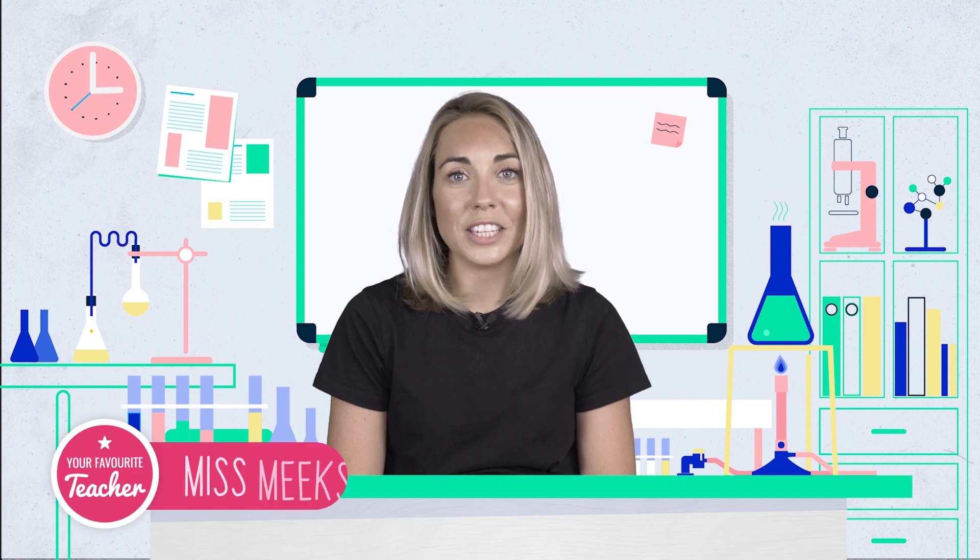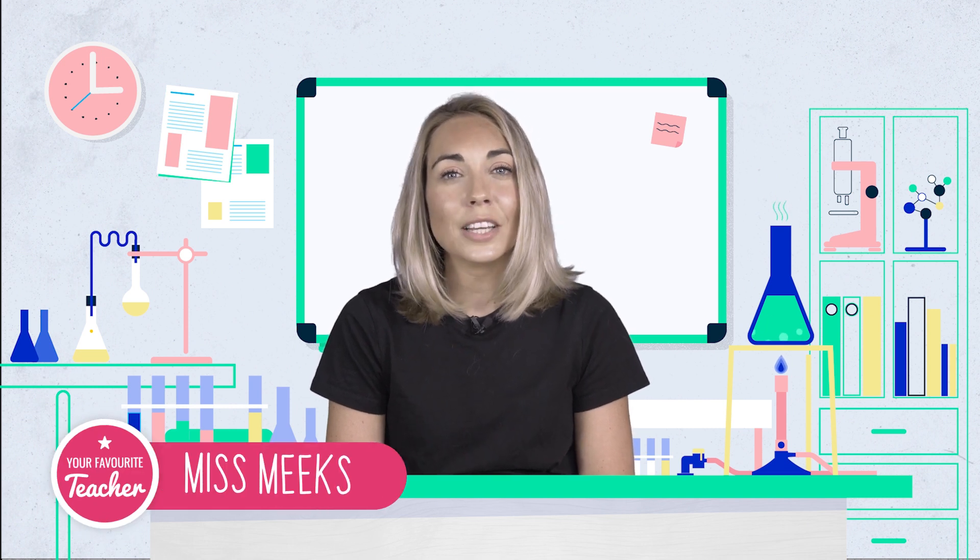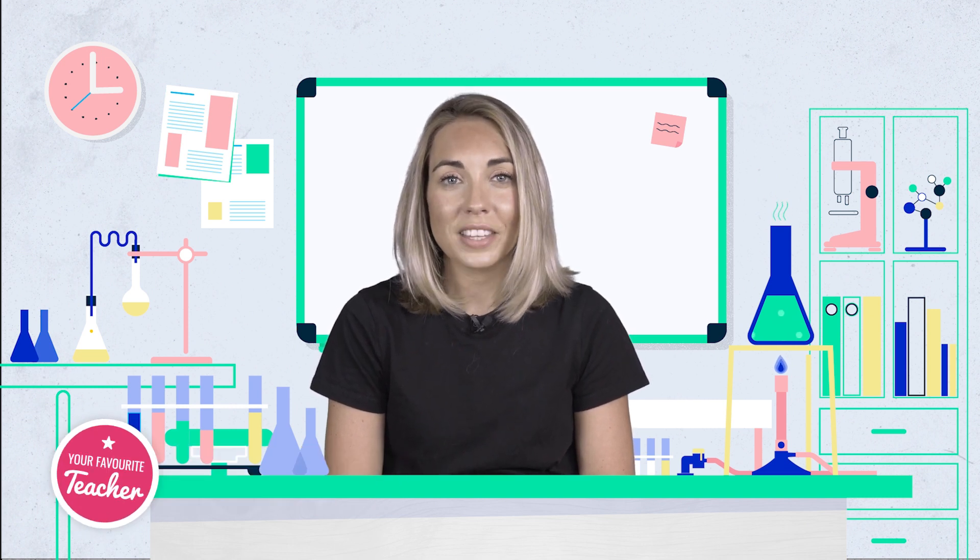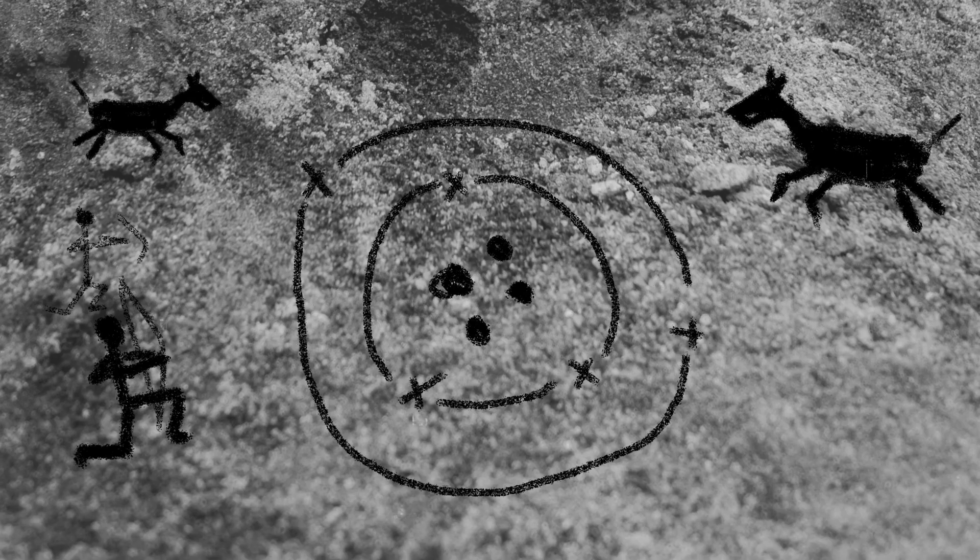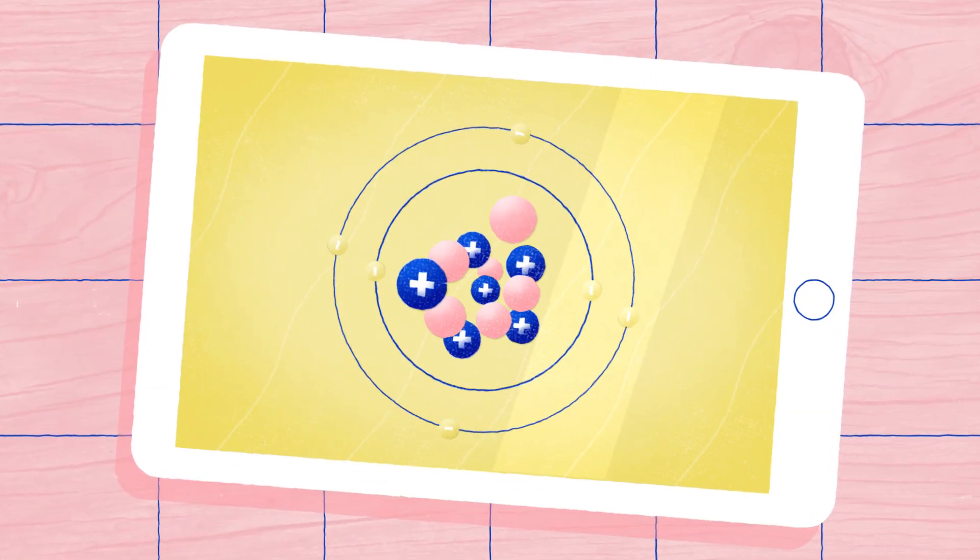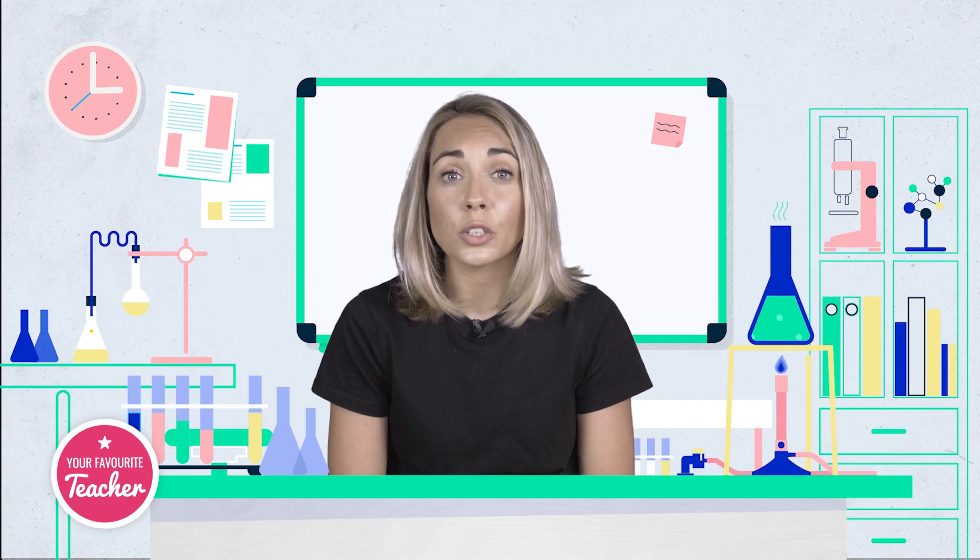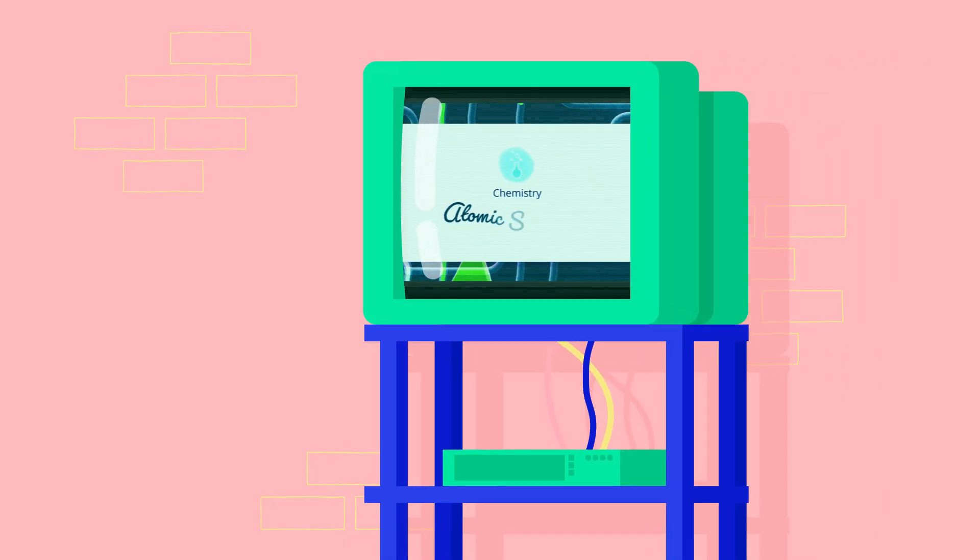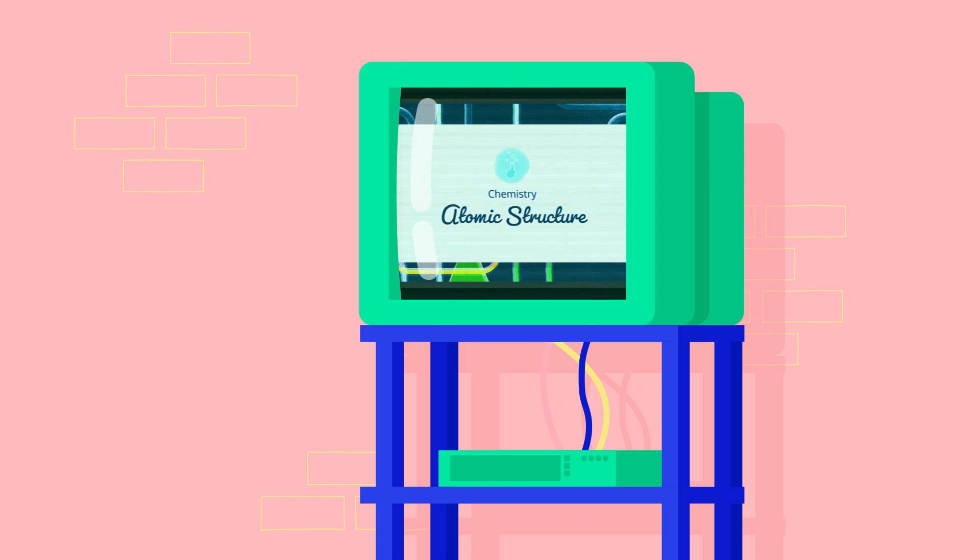Hello and welcome to your favourite teacher. Today we're going to be looking at electronic configuration. In previous units, we've looked at how the atomic model was developed over time and in detail at the current model. You'll need to know about the current atomic model before you carry on with this topic, so if you're not sure, please check out our previous lessons.